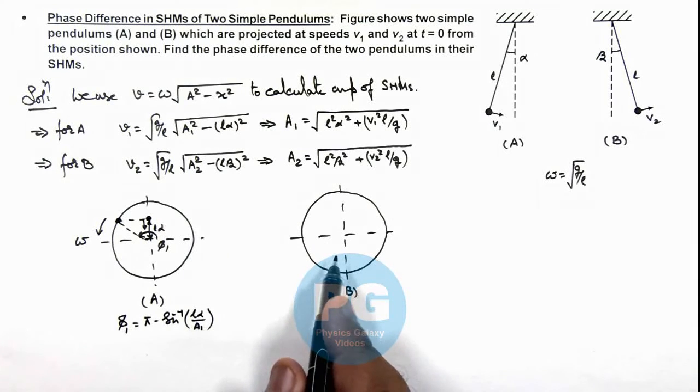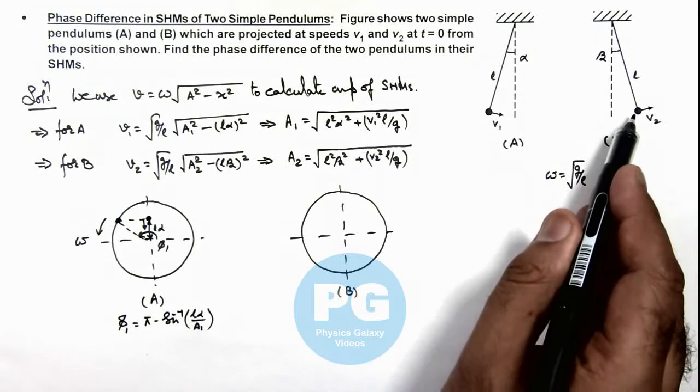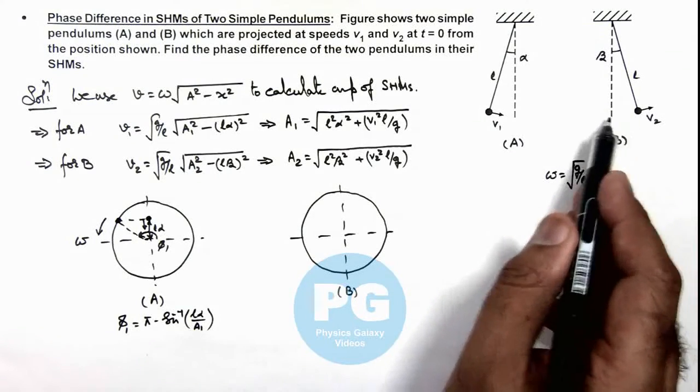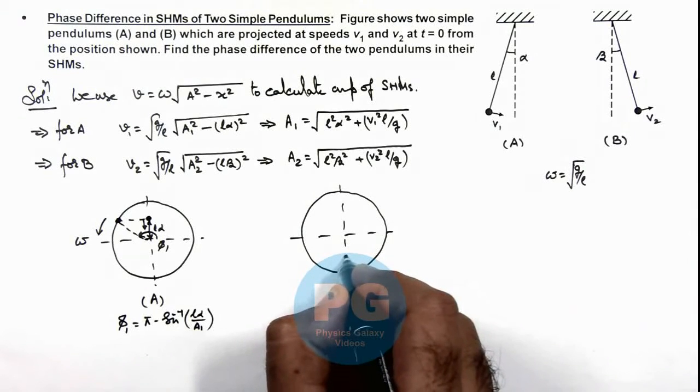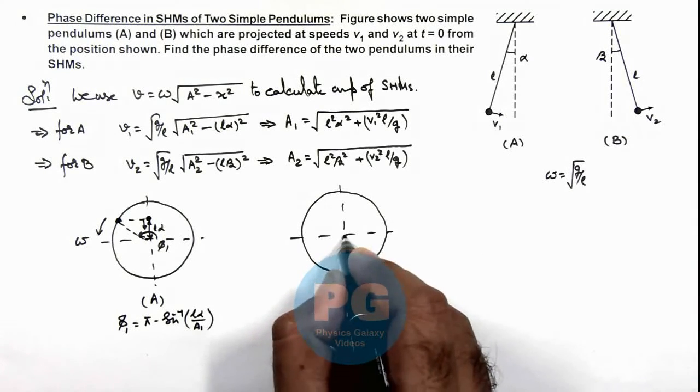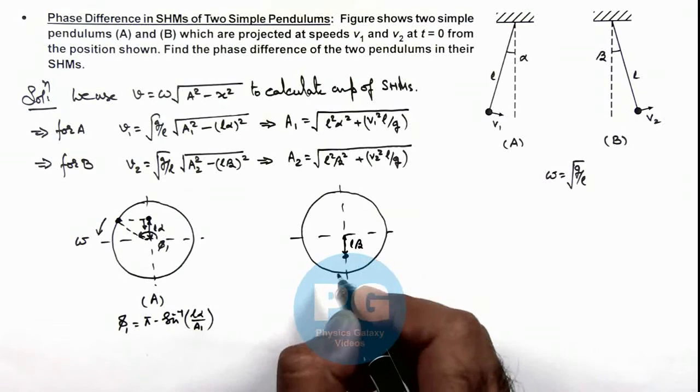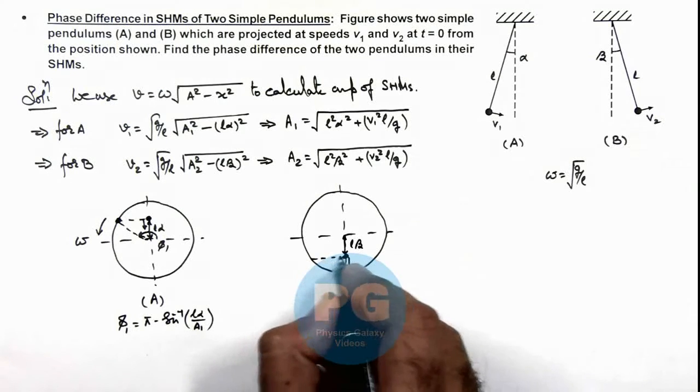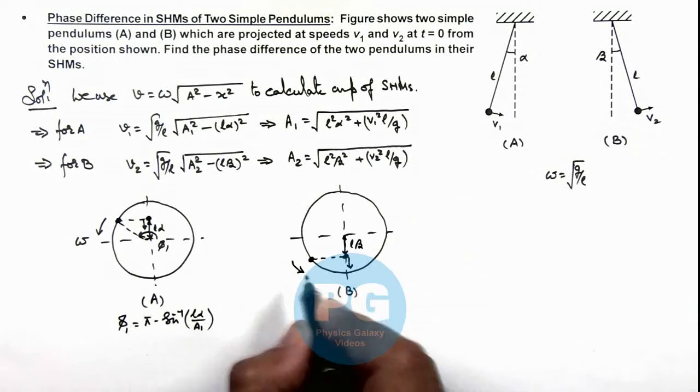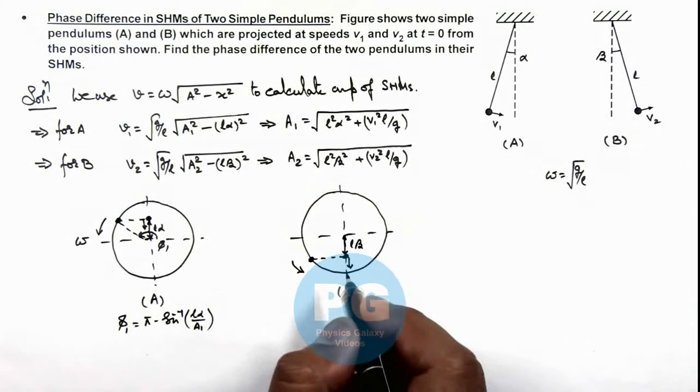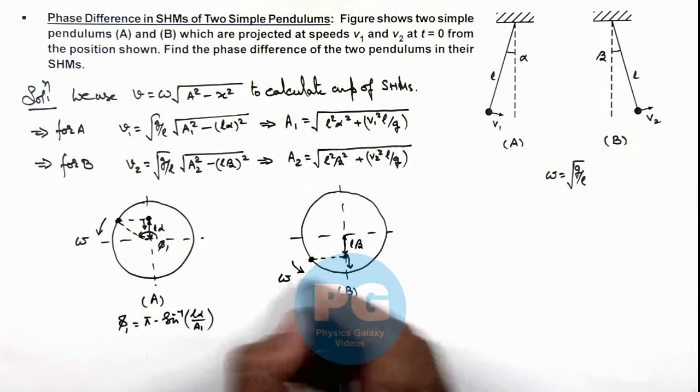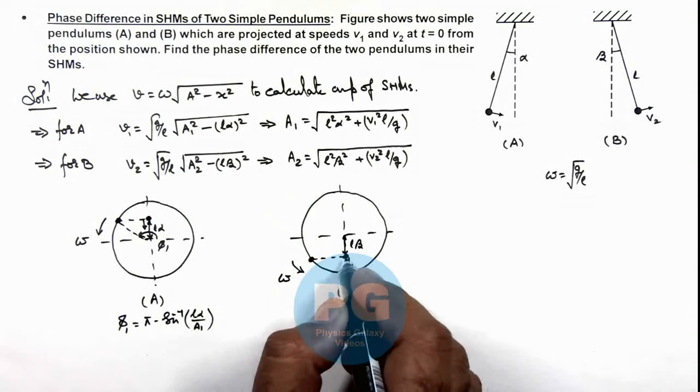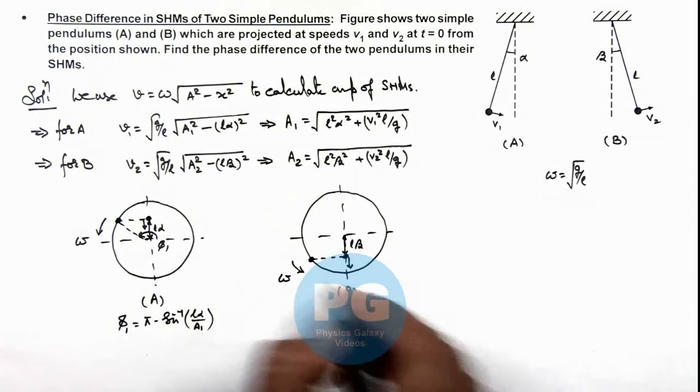And here the other particle in SHM of pendulum B is on the other side of mean position, so it can be considered to be located here at a distance l·β from the mean position. As it is going away from mean position, its reference particle can also be taken here, as we discussed in concept videos - the reference particle is always taken in the same direction as the anticlockwise angular speed.